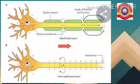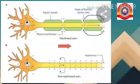Myelinated neurons means the presence of myelin sheath — these are called the white matter. Non-myelinated neurons are called the gray matter, meaning the myelin sheath is absent in that particular area.